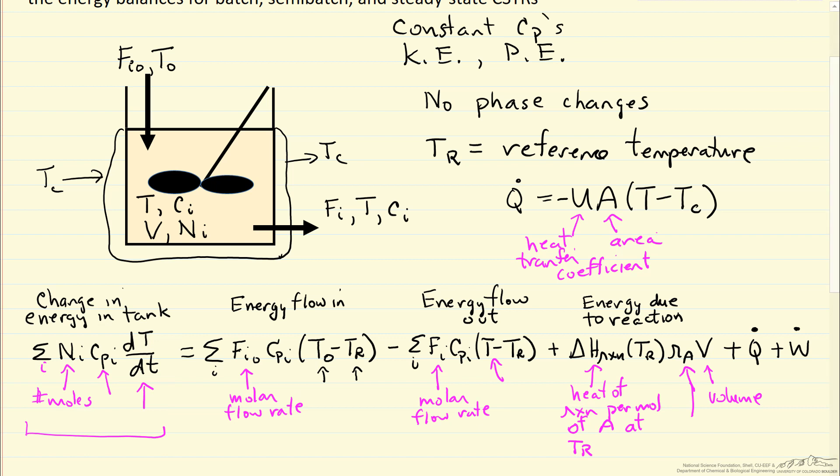If instead we're running a batch reactor, then the energy flow terms in and out would be zero, and we'd have to change the energy of the tank related to heat reaction, Q, and W.